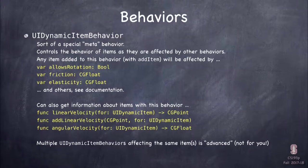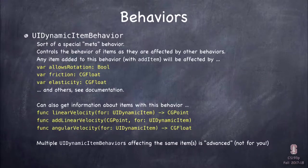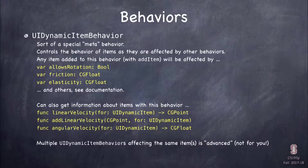UIIDynamicItemBehavior is a meta-behavior where you specify things like friction, elasticity, and whether you allow rotation as views bounce off things. This affects how all other behaviors work. You can also ask it about its items — things like what's your current linear velocity or angular velocity.